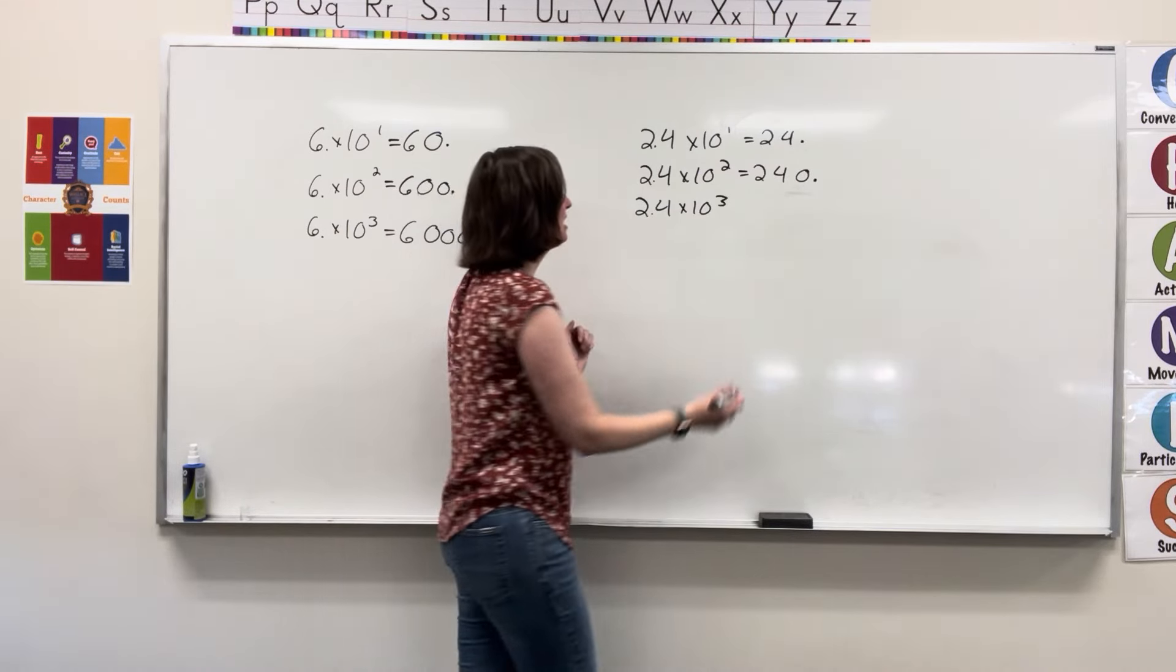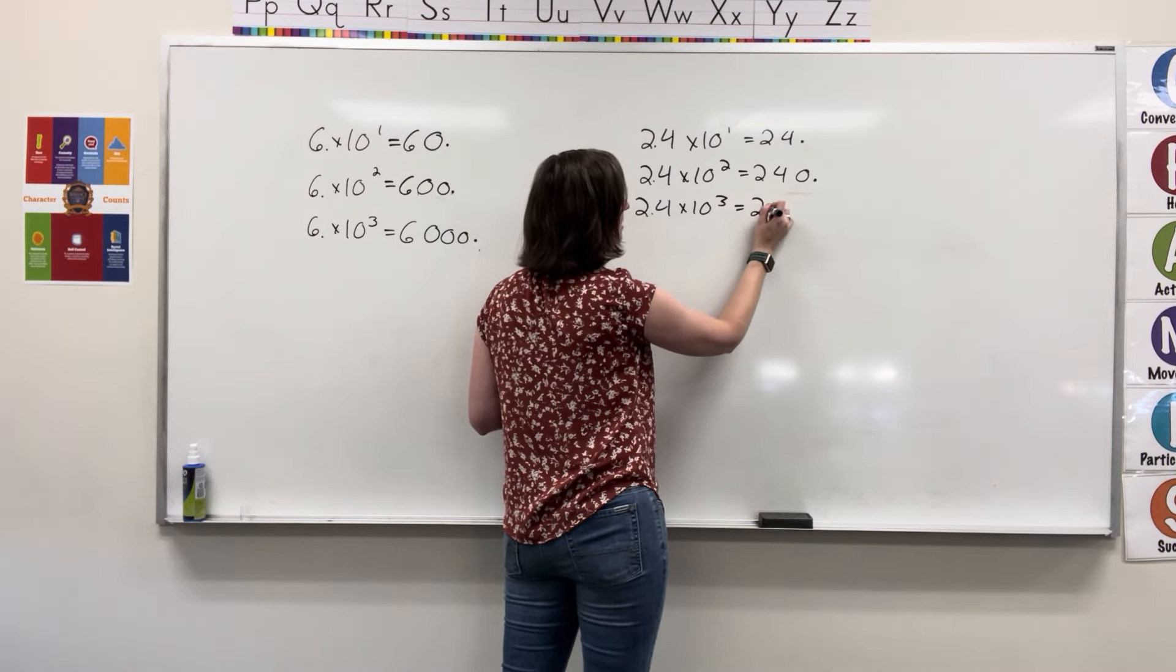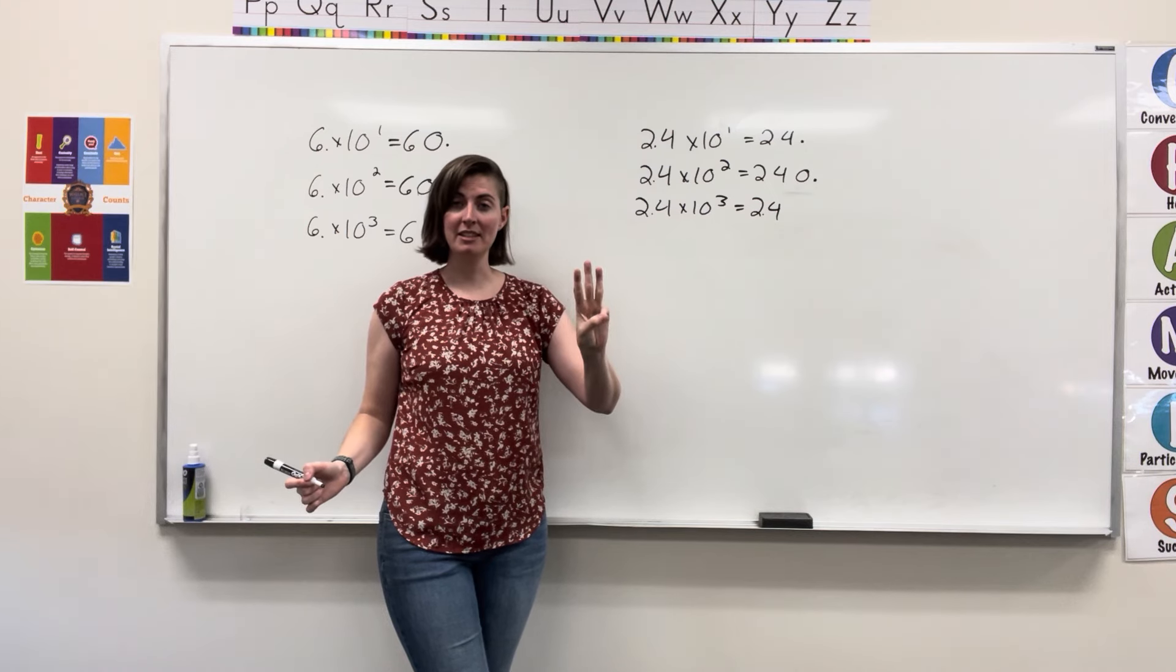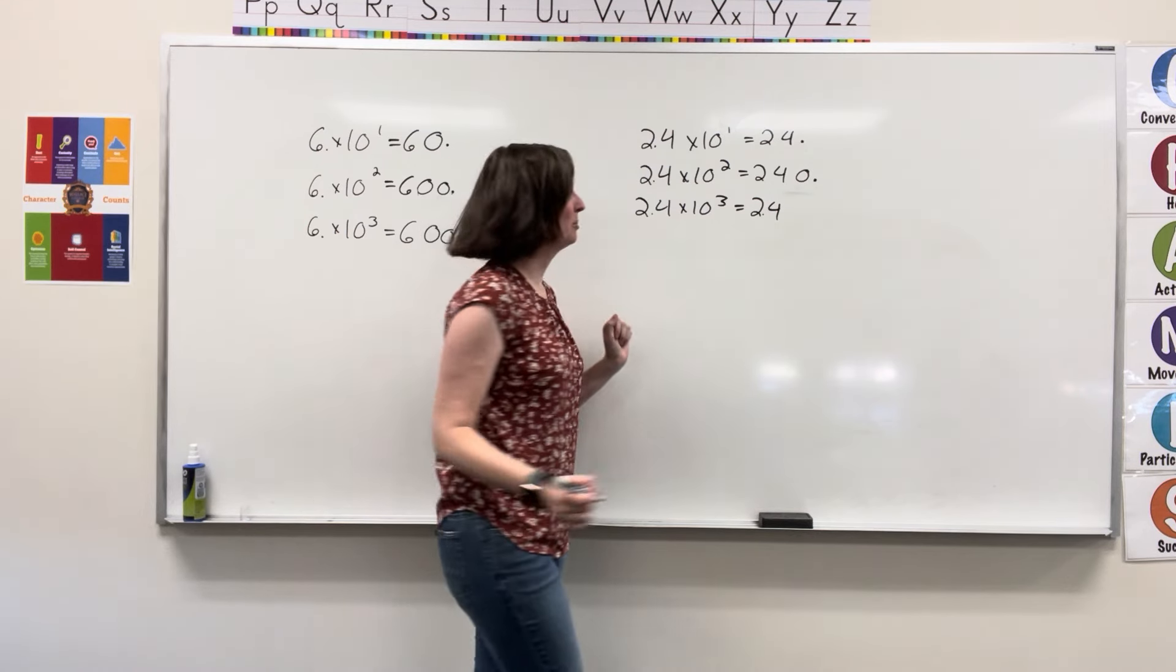For the final part of our example, we have 2.4 tenths again. Being multiplied by 10 cubed. Three places to the right because we're multiplying.